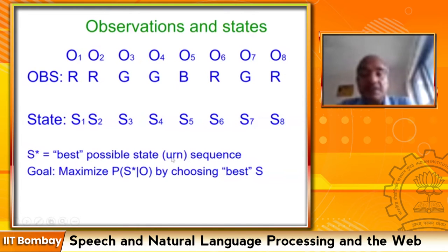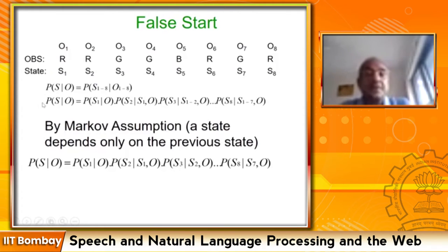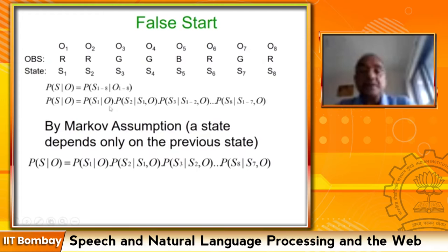S* is the best possible state sequence. Our goal is to maximize P(S|O), and the argmax returns the best possible state sequence S*. A false step would be to take P(S|O) and directly decompose it by the chain rule, then apply an independence assumption saying each state depends only on the observation at that position — converting it into P(s1|o1) · P(s2|o2) and so on.